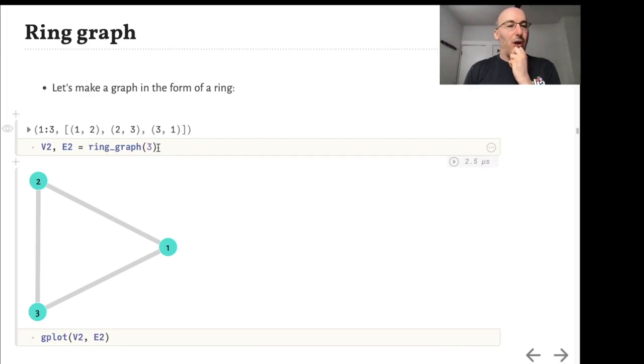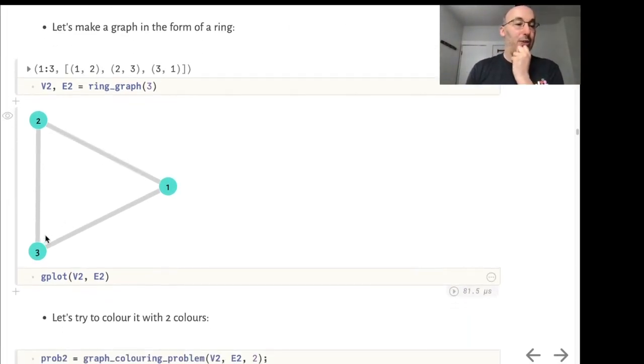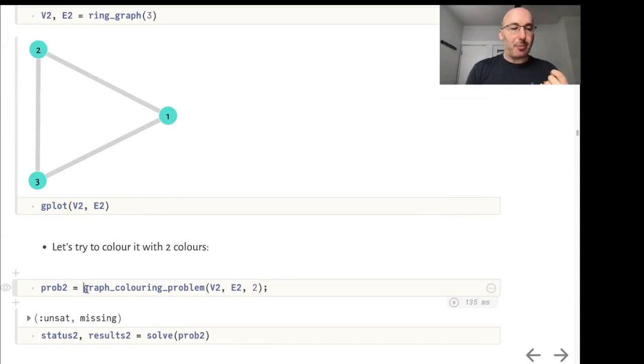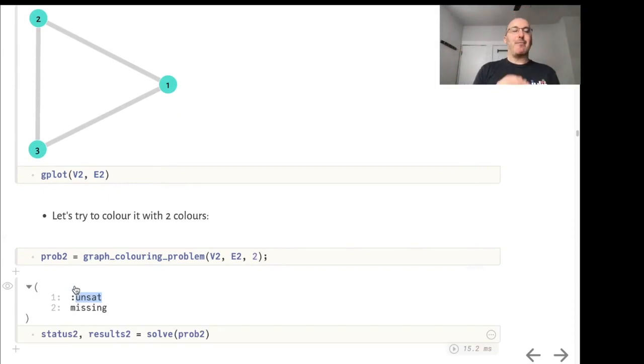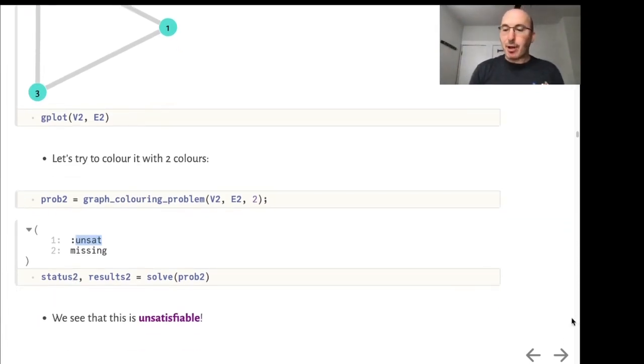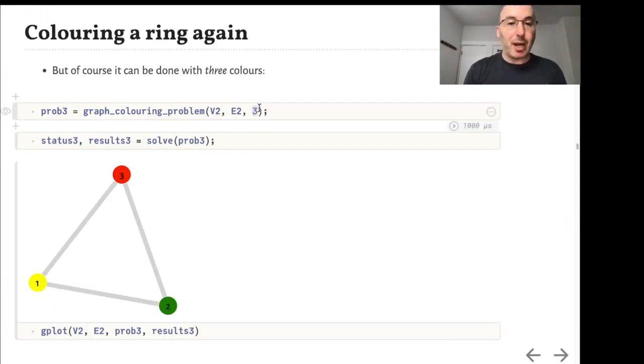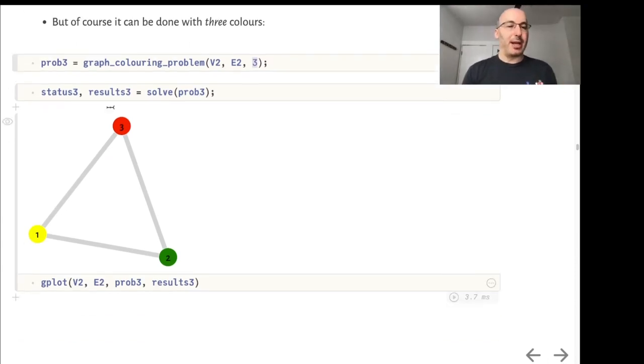Now suppose we had a ring graph, a graph in the form of a ring. It's clear that we can't actually color this with two colors. Let's set up this graph coloring problem with two colors, and the result is unsat. That means this system of constraints is unsatisfiable. It is not possible to satisfy all constraints simultaneously. However, if we do the same thing with three colors, it is possible, and here is the result.